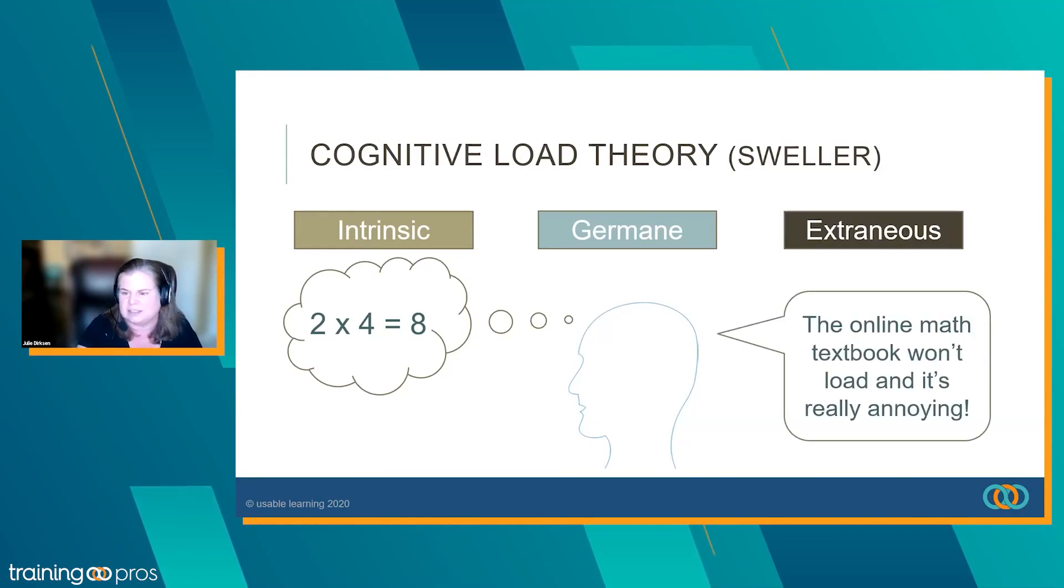And then there's extraneous, which is just all the annoying stuff around it that's pulling your attention away and is unnecessary. Anybody who had kids at home during lockdown probably dealt with things like online textbooks or getting kids logged into their classes. Anyone knows what I'm talking about when I say extraneous cognitive load. Stuff that did not help the learning at all, but just took a lot of time and energy away from it.